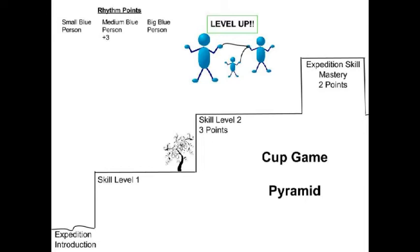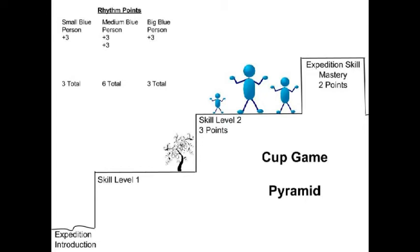Large and small blue person earn three points each and level up to join medium blue person. Plus medium blue person earns three points for helping his friends up to level 2.